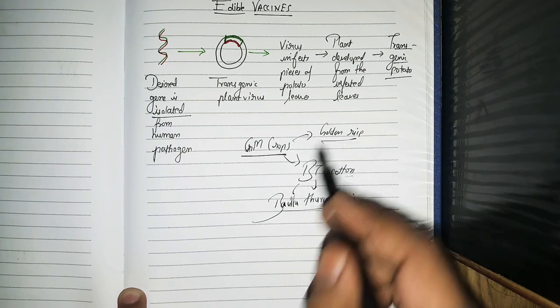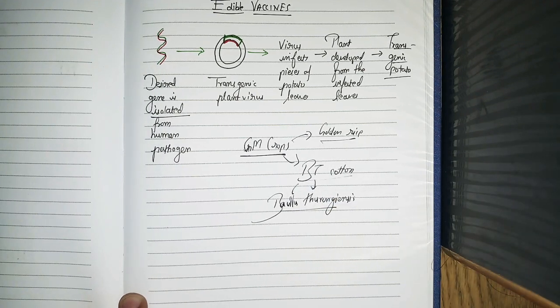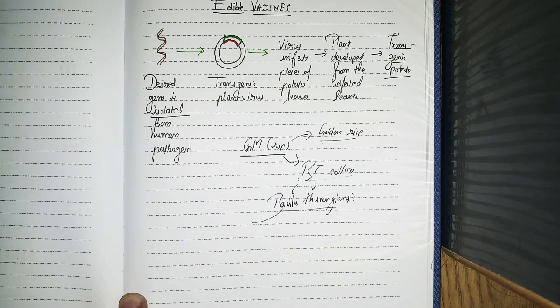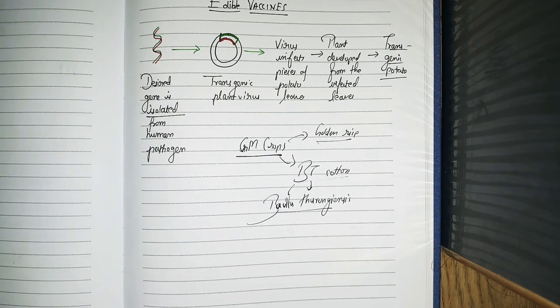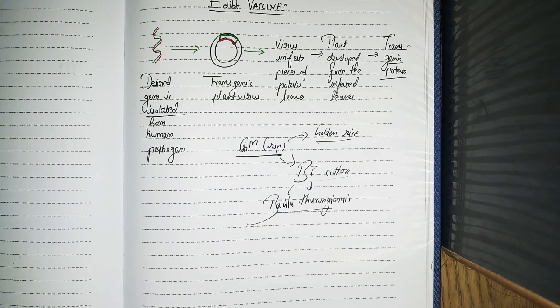So what are genetically modified crops? Basically, they are the crops which have foreign genes with the desired characteristics integrated into their genome.